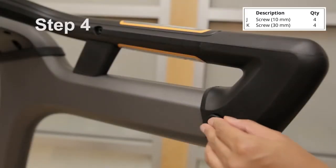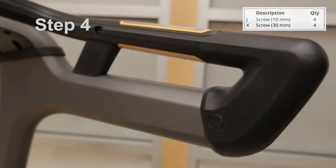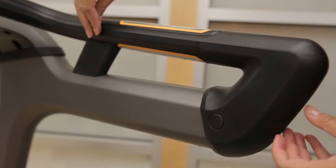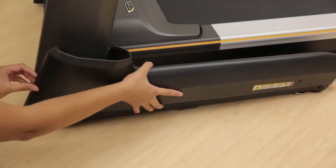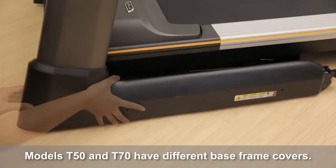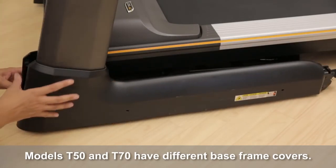Insert the handlebar caps onto the handlebar to conceal the bolts. At the base of the console masts, attach the base frame covers using a Phillips screwdriver.